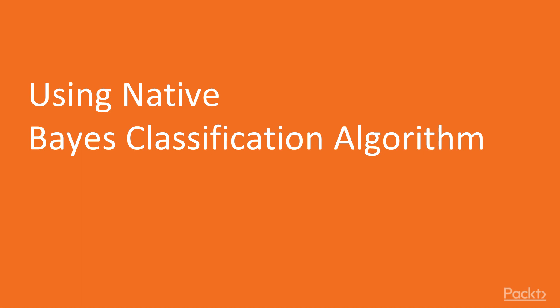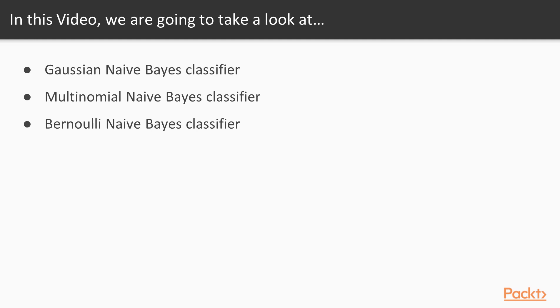Welcome to the first video of this section: using the Naïve Bayes classification algorithm. In this video we'll learn about scikit-learn's implementation of the Naïve Bayes classification algorithm, and how to use the `naive_bayes` scikit-learn submodule. We'll explore the Multinomial Naïve Bayes classification classes and also learn about the Bernoulli Naïve Bayes classifier.